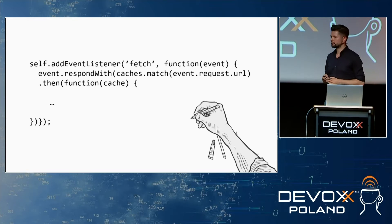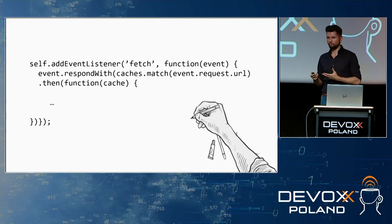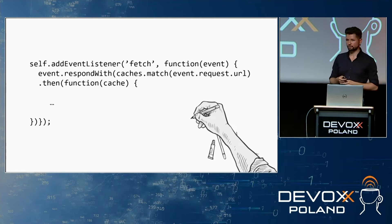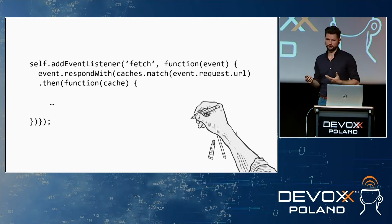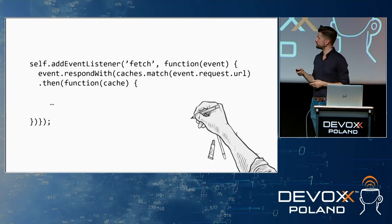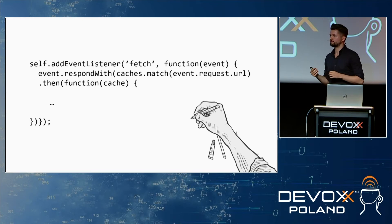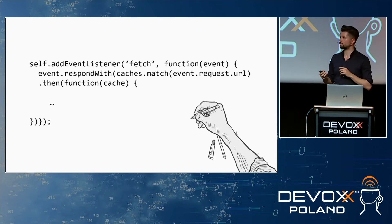We also want to add a fetch listener. This event fires when the domain connected to the service worker sends a message to the remote server, and here we can intercept that request and do anything with it. In this method, we put all our logic to retrieve documents from cache or send requests to our offline queue for later synchronization.